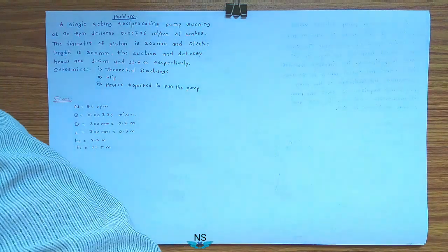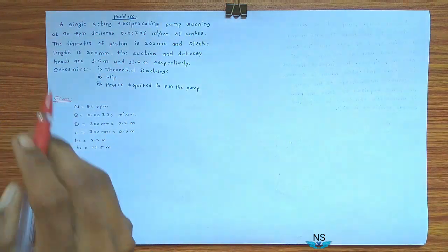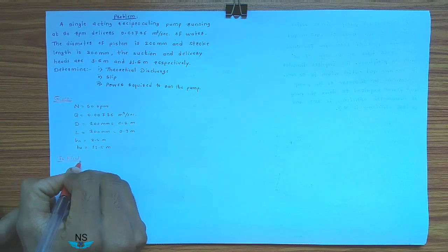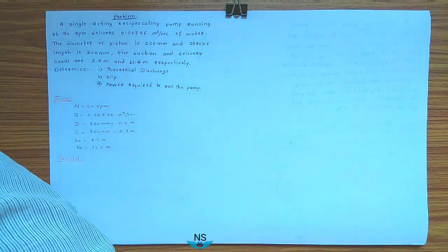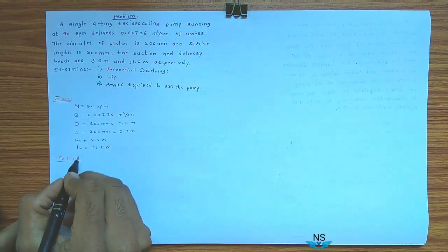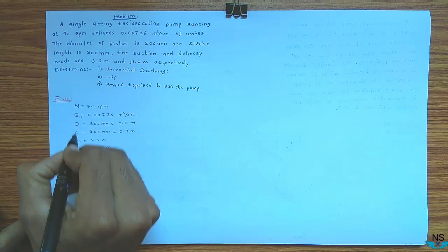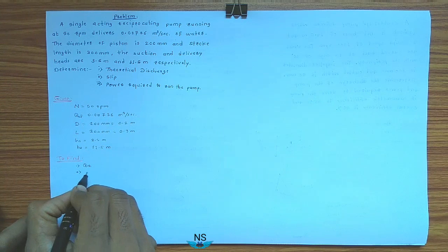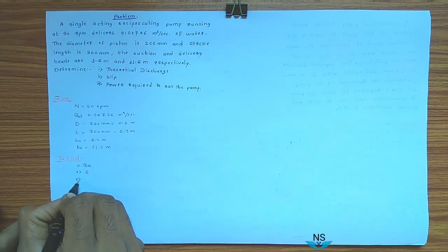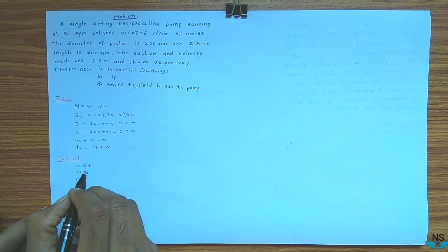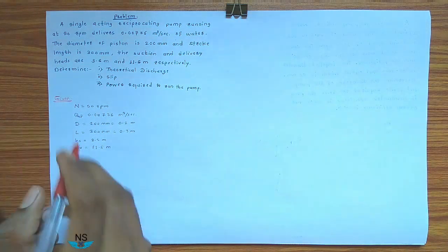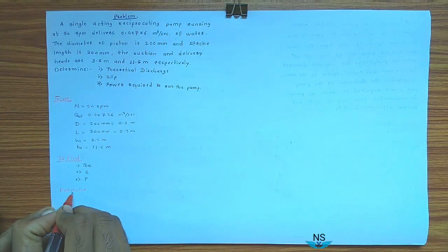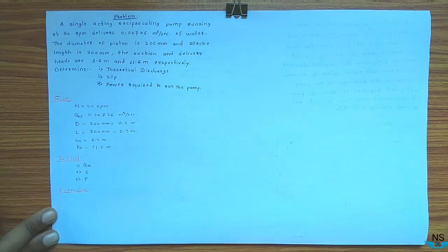So you have to find: first, theoretical discharge — the actual discharge is given — second, slip, and third, power required to run the pump. So the required formulas are as follows.